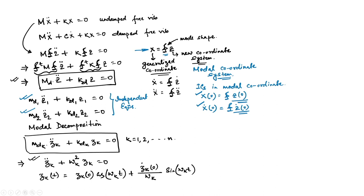We have already discussed how to get the initial conditions in the modal coordinate from the known information — the initial conditions in the generalized coordinate. Once we find z, we can find x in the generalized coordinate because x = φ·z. That is the solution of undamped free vibration.